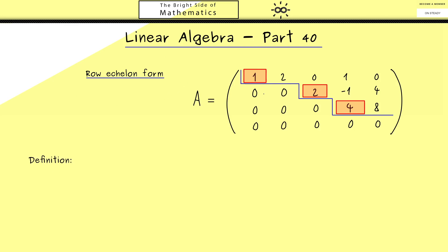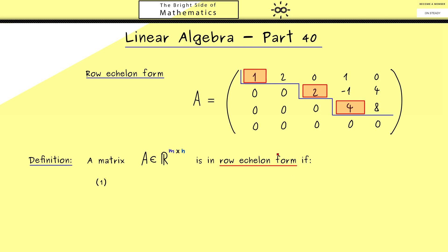Now let's put this into a general definition. We start with a matrix A of rectangular form with m rows and n columns. This matrix is called to be in row echelon form if it fulfills two conditions. The first condition is that if there are any rows completely filled with zeros, they must be at the bottom of the matrix — otherwise these nice steps would be broken by such a zero row.